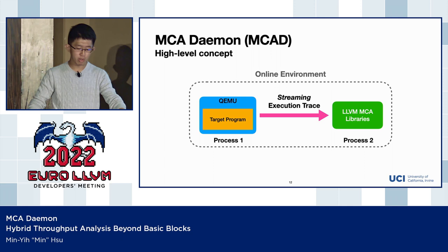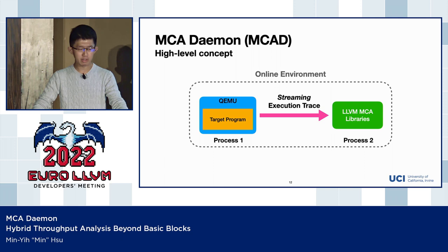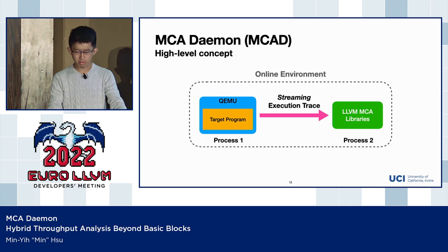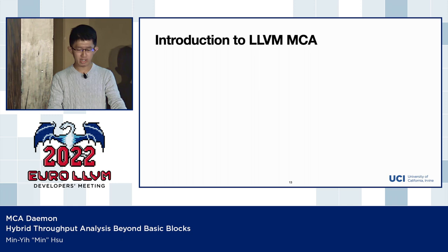To be more specific: for the dynamic runtime, we use QEMU, a high-performance simulator/emulator for numerous hardware architectures. Note that QEMU is not cycle-accurate, so it's actually blazing fast. For the throughput analysis tool, we use LLVM-MCA. So let's talk about LLVM-MCA first.